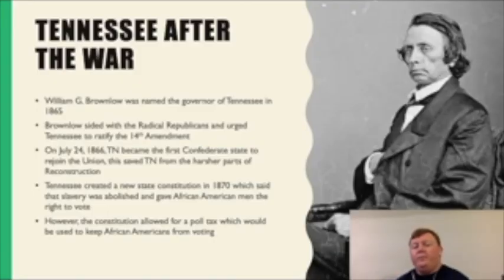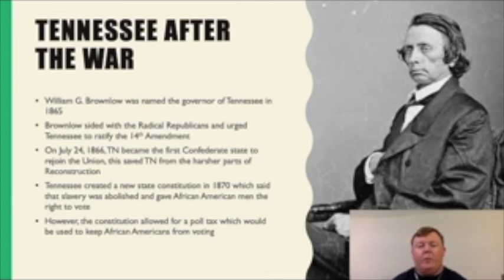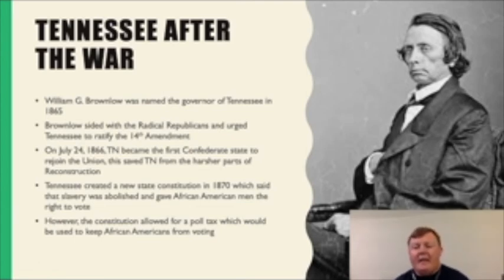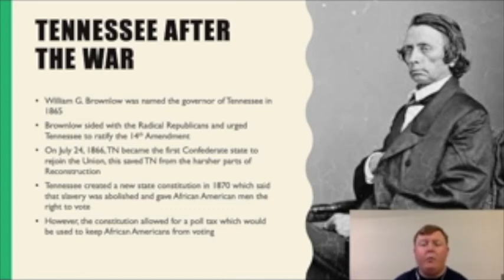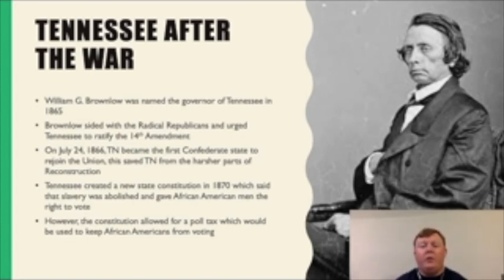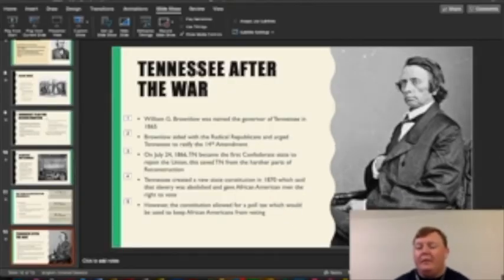That is Chapter 22, covering the first part of Reconstruction: Lincoln's, Johnson's, and the Radical Republicans' plans for Reconstruction; Lincoln's assassination; Johnson's impeachment; Black Codes; and Tennessee after the war. In the next video, we'll get into Chapter 23 — the last chapter in the textbook — and cover the remaining parts of Reconstruction until it ends in 1877.